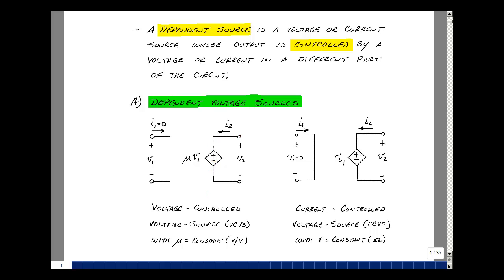The second possibility is a current controlled voltage source. So I've got the voltage source symbol again, and the voltage V2 is equal to R times I1. The ratio of V2 to I1 has units of resistance, and so the scale factor R has units of ohms.